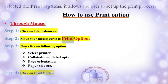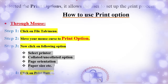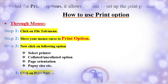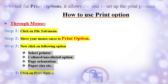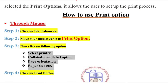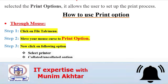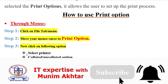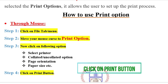In step three, there are a few settings you must adopt: select printer, collated or uncollated, page orientation, and paper size. After selecting all these things, you must click on the Print button.